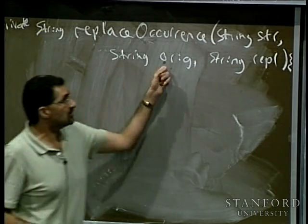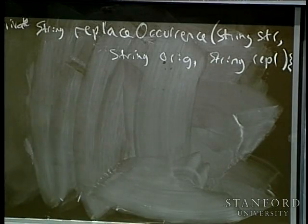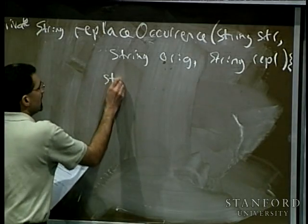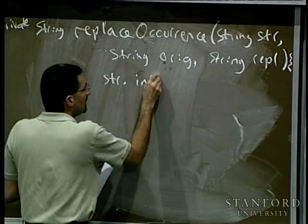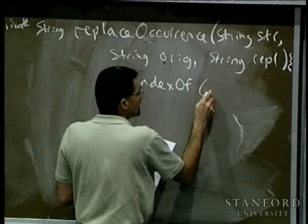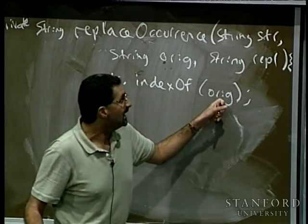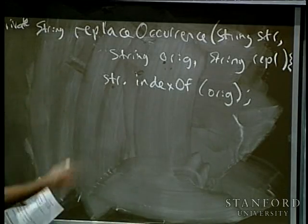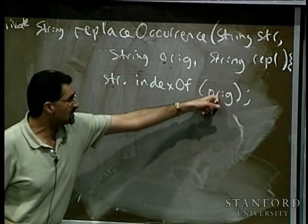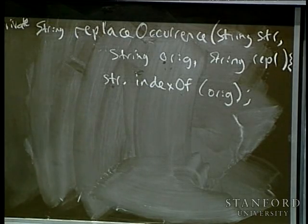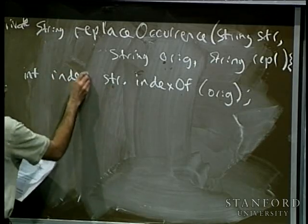The first thing we want to do is find the original string — see if it appears somewhere in the string, because if it doesn't, we're done. There's a method from the string class called indexOf. What indexOf does is: I pass it some string, like the original string I want to look up, and it returns a number — the index of the position of the first character of that string if it appears in the larger string. If it doesn't, it returns negative one. I assign this to a variable called index.